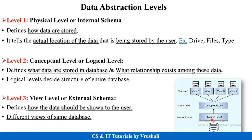Physical level decides how your data is stored — it decides the actual location and path of your database, for example the drive, type of file, and type of database. Conceptual level decides what data is stored in the database — basically it decides the structure of your table: rows, columns, relationships between tables, and which types of keys and constraints are used. Everything about the structure of the entire table and database is decided at the conceptual level.